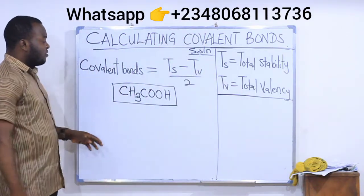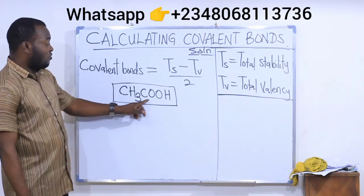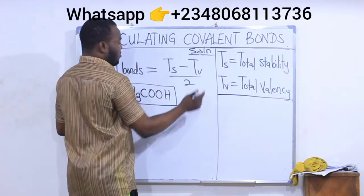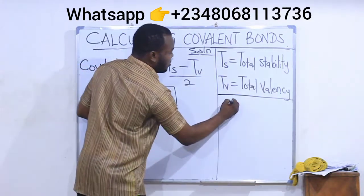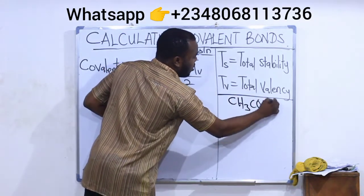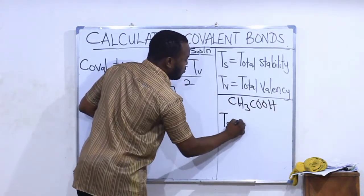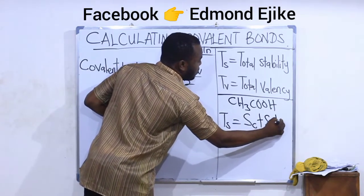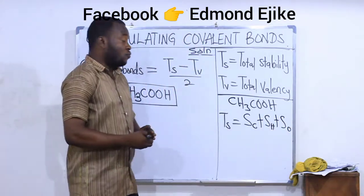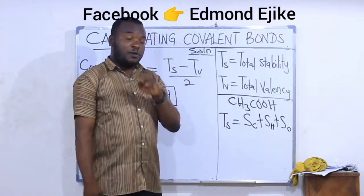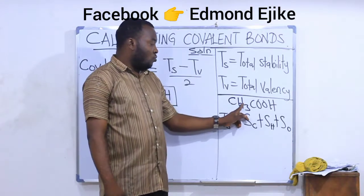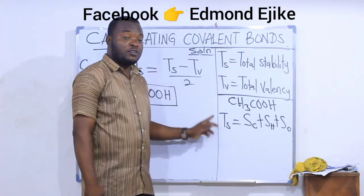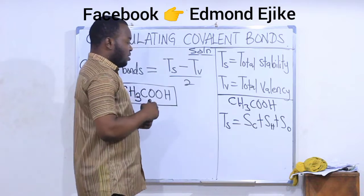So let's solve this problem. We are asked how many covalent bonds are present in CH3COOH, which is ethanoic acid. So here we are going to find the total stability. For CH3COOH, our total stability will be stability of carbon plus stability of hydrogen plus stability of oxygen. Why do I say so? Because the compound contains only three elements: carbon, hydrogen, and oxygen. So if I bring stability of each of them, it will give me the total stability.